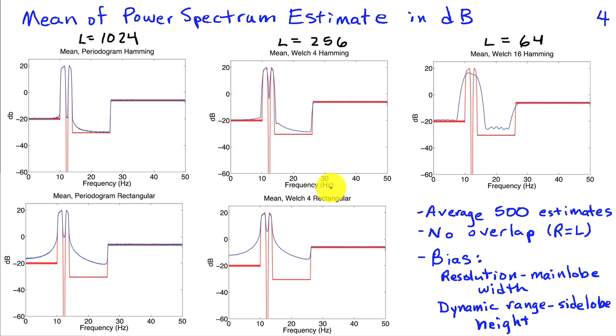So given a fixed amount of data, when one uses a method like Welch's method, you're forced to compromise between bias and variance. But if you understand how these properties trade off, you can hopefully make a good choice for your particular application.